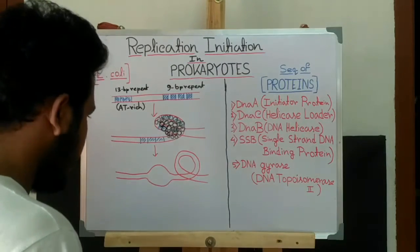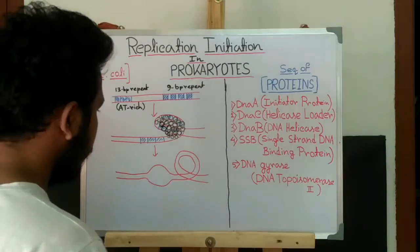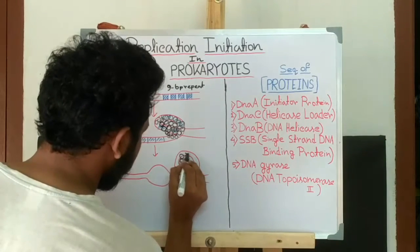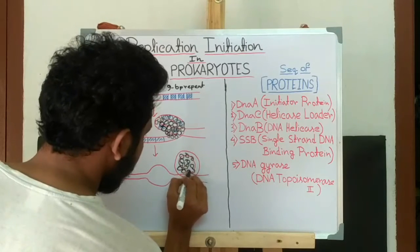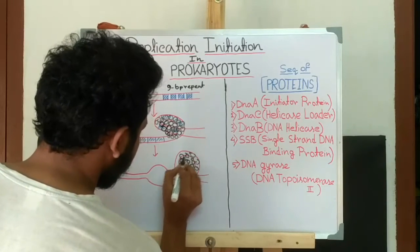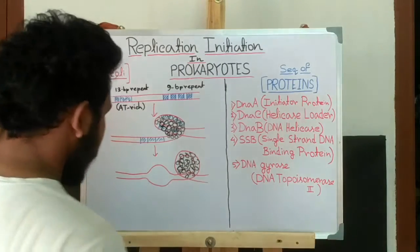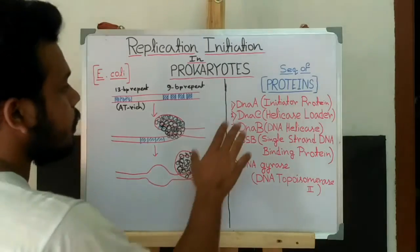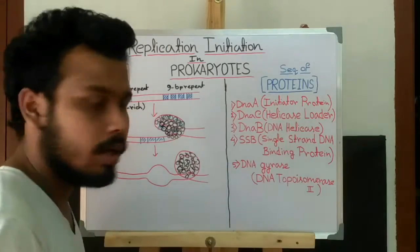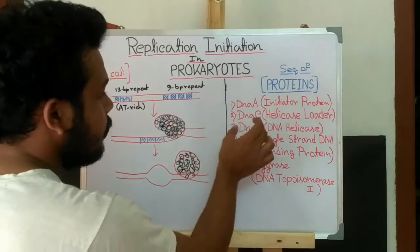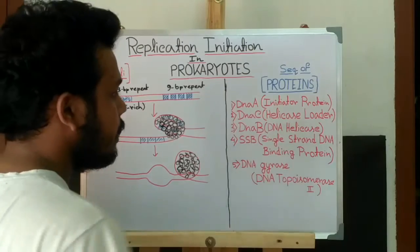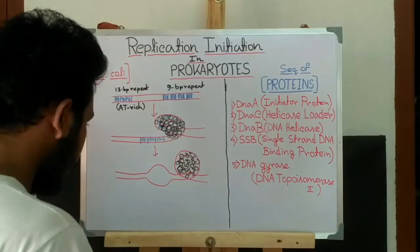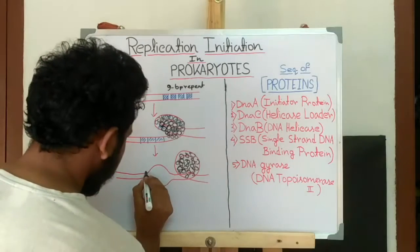DnaA is still bound to the 9-mer repeat and this replication bubble creates two replication forks. Now DnaC, that is the helicase loader, carries DnaB, that is the DNA helicase, and recruits it to the two replication forks.